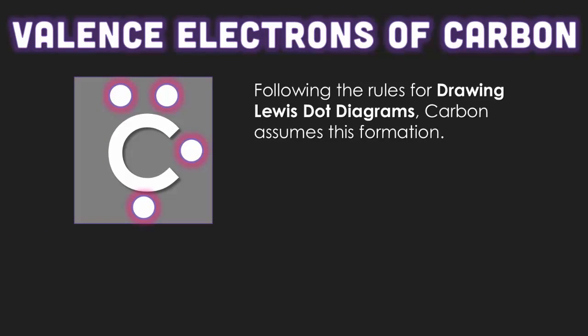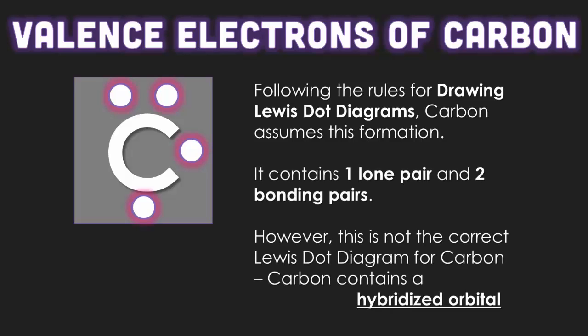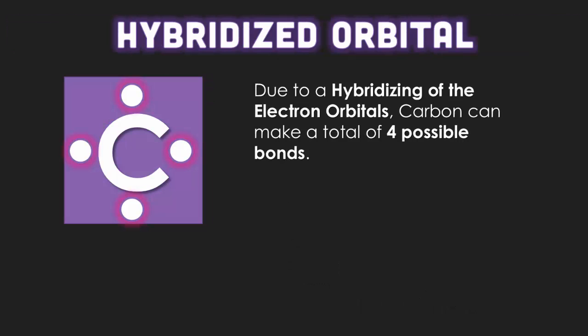When we're looking at carbon, carbon doesn't necessarily follow the Lewis dot diagram rules that we spoke about. It contains one lone pair and two bonding pairs if you follow the idea that we had described earlier. However, this is not correct because carbon contains what we call hybridized orbitals. Due to the hybridizing of the electron orbitals, carbon can make a total of four possible bonds. This is because the S and P blocks share valence electrons.